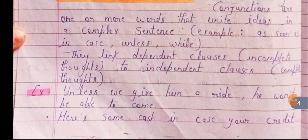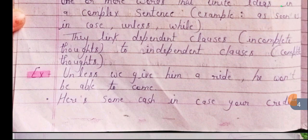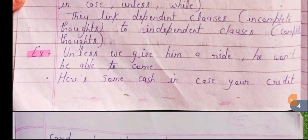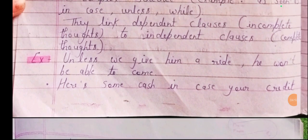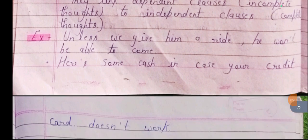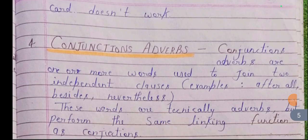Dependent clauses are incomplete thoughts; independent clauses are complete thoughts. For example: 'Unless we give him a ride, he won't be able to come.' Another example: 'Here is some cash in case your credit card does not work.' The subordinating conjunctions here are 'unless' and 'in case.'